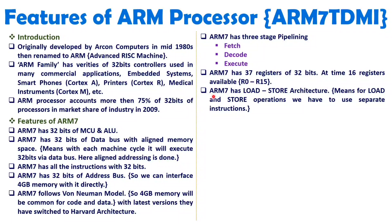ARM7 follows load and store architecture, where load and store are performed by separate instructions. Load means loading the value of a register from a memory location. Store means storing the value of a register onto a memory location. These operations require separate instructions — there is no single common load-store instruction. So ARM7 follows load-store architecture with separate instructions for each.